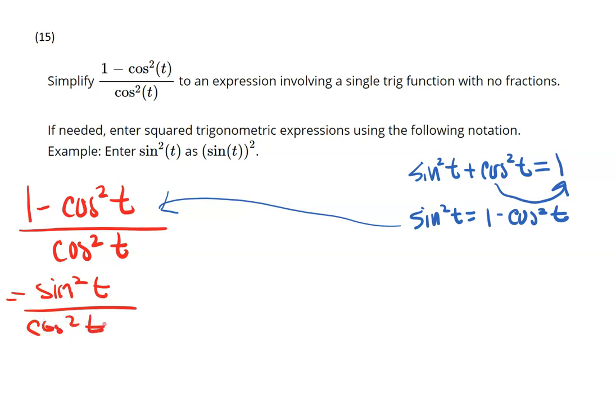And just because I had that 1 minus cosine squared t is what made me go the Pythagorean identity, even though I only have cosines throughout there. Because then I can see that sine over cosine is equal to tangent, so this gives me tangent squared t as a result. And so this one actually went pretty quickly, but you did have to know that Pythagorean identity in order to manipulate it. So I hope this helps with 14 and 15. If you need additional help or resources, please reach out.